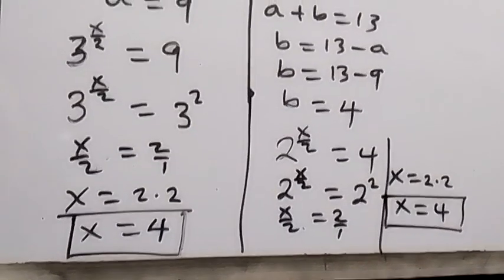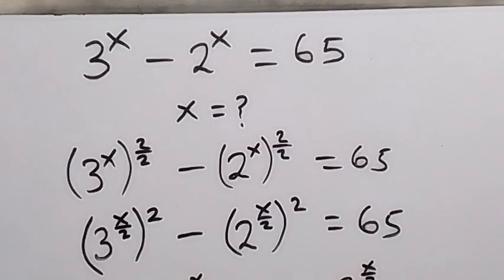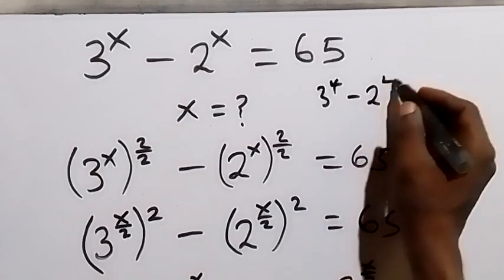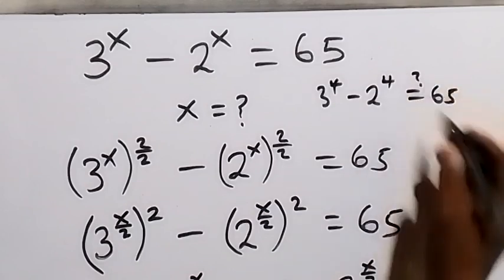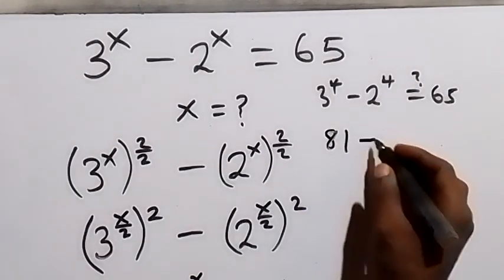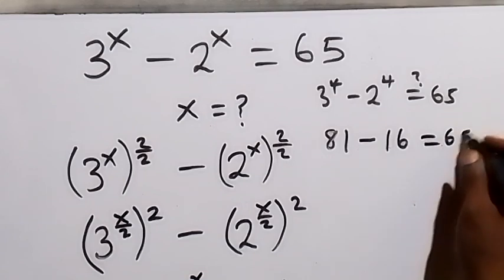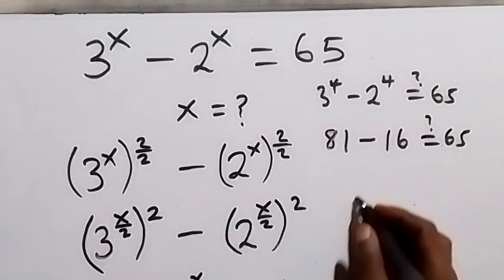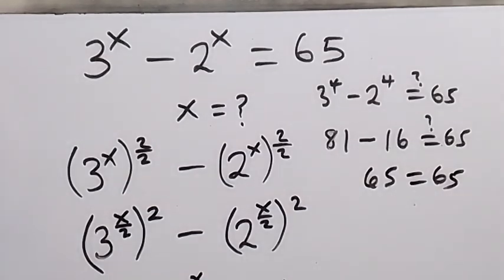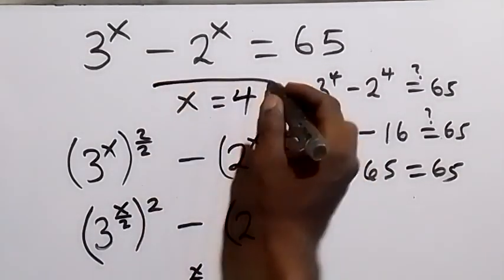We can verify by substituting x = 4 back into the original equation: 3 raised to power 4 minus 2 raised to power 4 equals 65. 3 to the 4th is 81, and 2 to the 4th is 16. 81 minus 16 equals 65, which matches the right-hand side. The left-hand side equals the right-hand side, confirming that x = 4 is the solution.